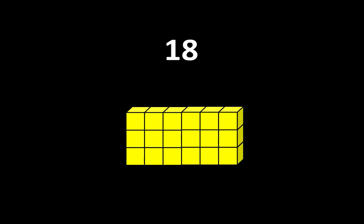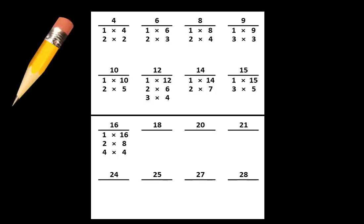Let's write this on the paper. Write that we can think of 18 as 1 group of 18 or 18 groups of 1. And we can also think of it as 2 groups of 9 or 9 groups of 2. And we can also think of 18 as 3 groups of 6 or 6 groups of 3. Remember to pause the video if you would like more time.